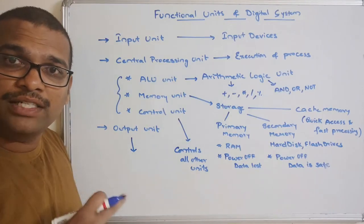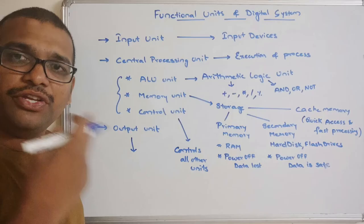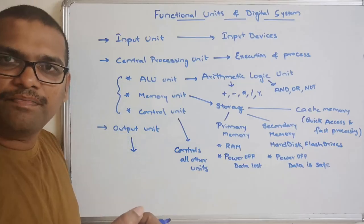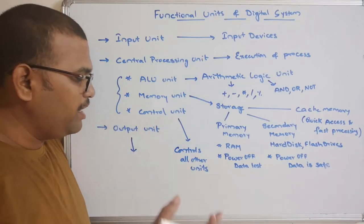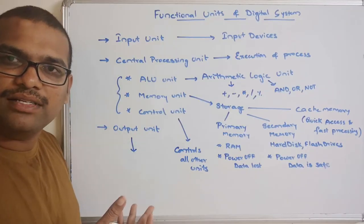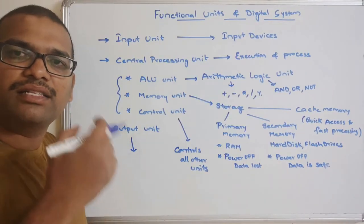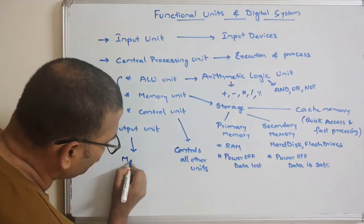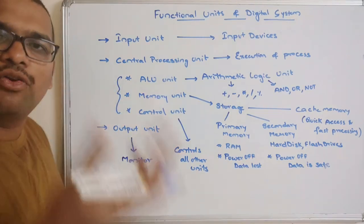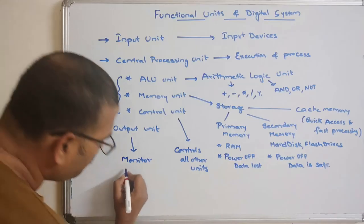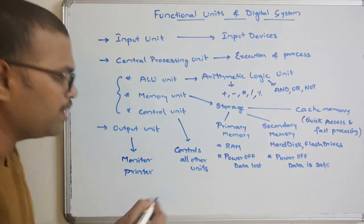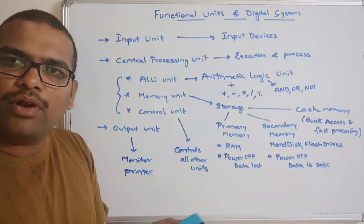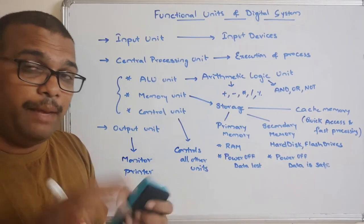The last one is the output unit. Once the data has been processed by the central processing unit, the output should be delivered to the user through output devices. We know output devices such as the monitor — through which we see the output — and the printer, which is also an output device. We majorly see outputs on the monitor.